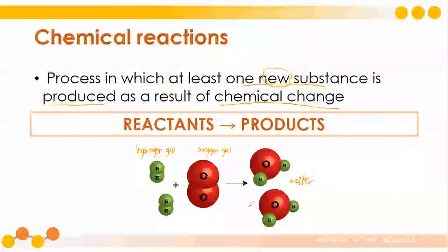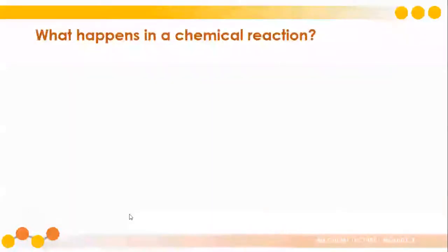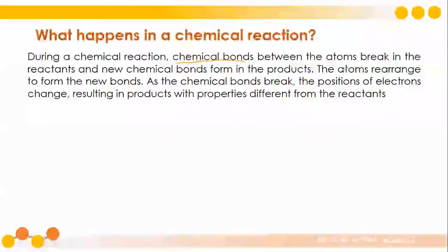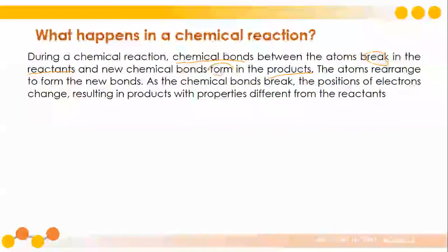This is a result of a chemical change. What is this chemical change that we are referring to? How do chemical reactions occur? During a chemical reaction, chemical bonds between the atoms break in the reactants and new chemical bonds are formed. The bonds in the reactants break, and the bonds in the product are being formed.